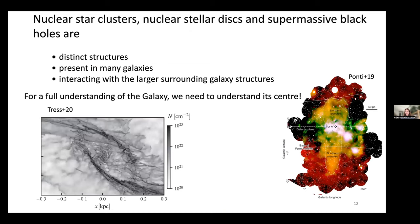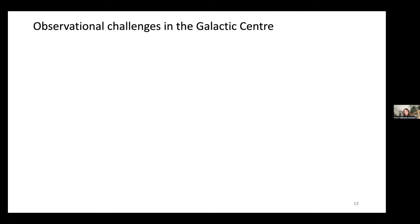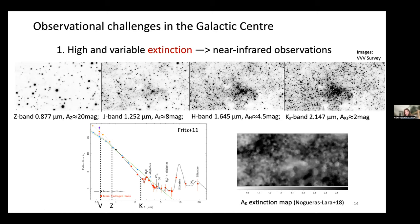As observers trying to understand the galactic center, we face several challenges. The first is very high extinction caused by interstellar gas and dust in the spiral arms and the bar. In the optical V-band, extinction is 30 magnitudes, making a 10-magnitude star appear as 40 magnitudes — too faint to observe. However, extinction depends on wavelength and decreases in the near-infrared. More and more stars become visible as we go to longer wavelengths.